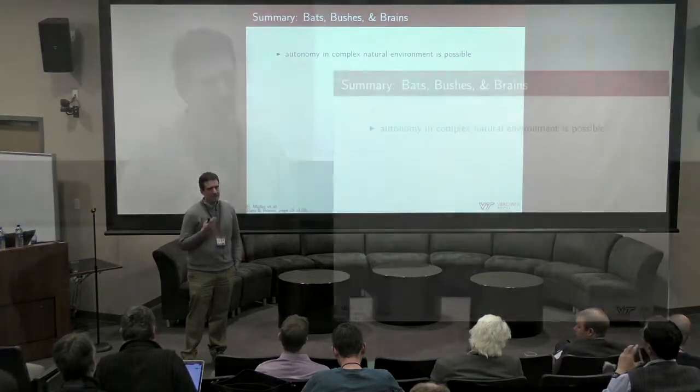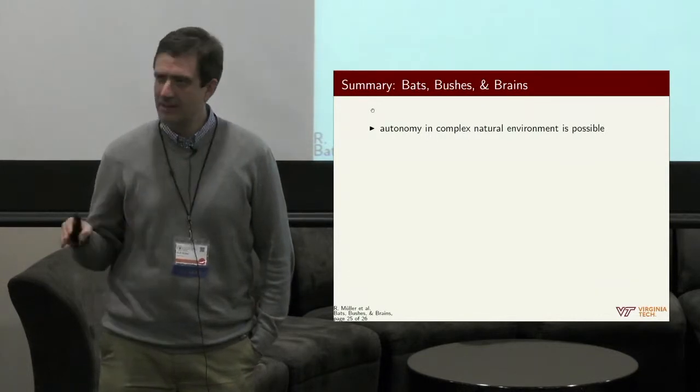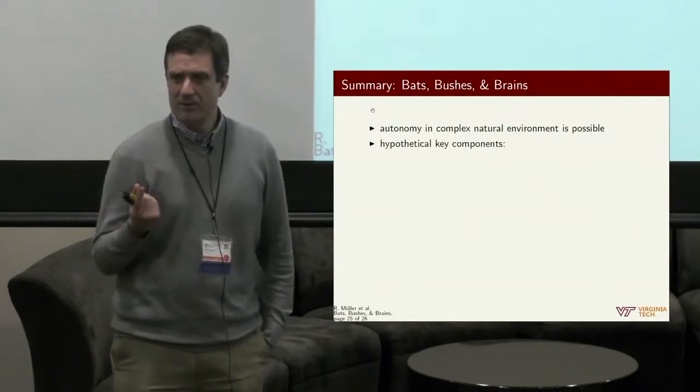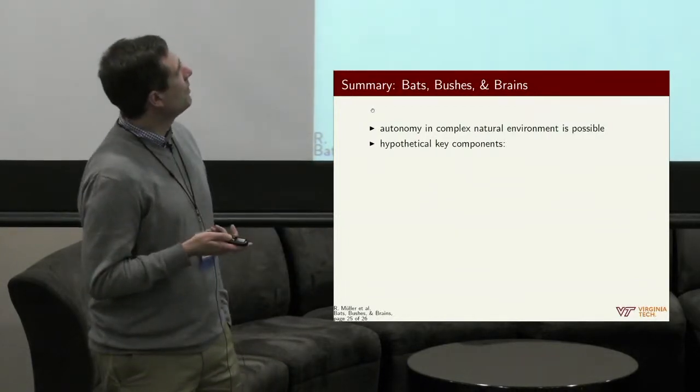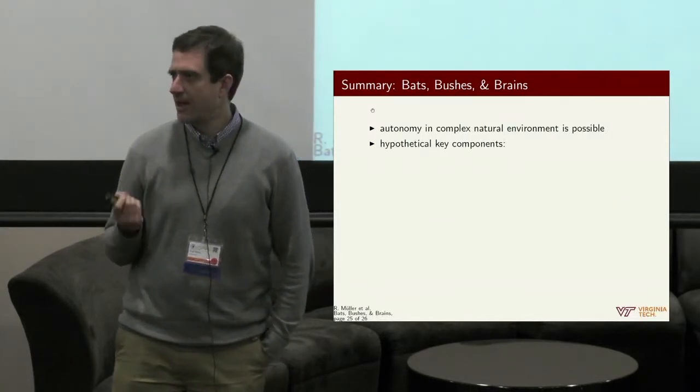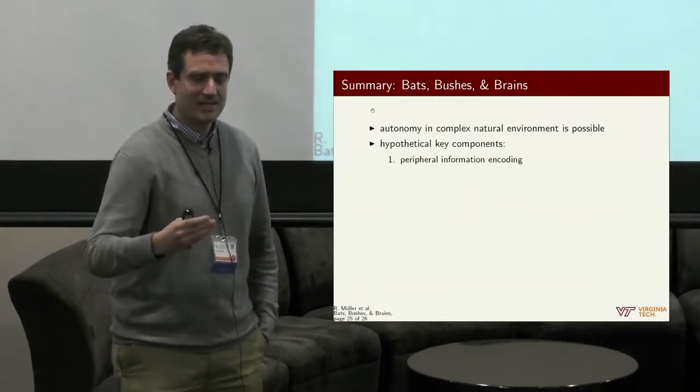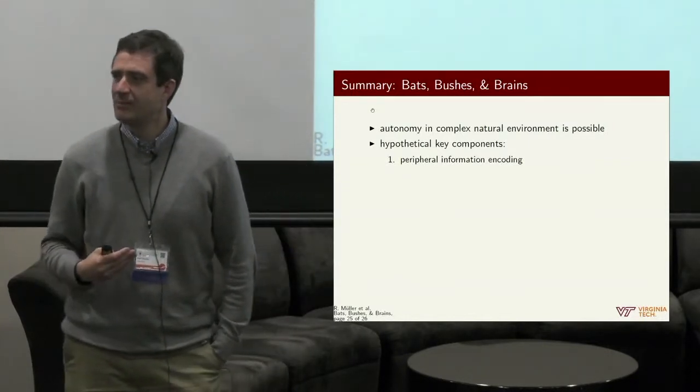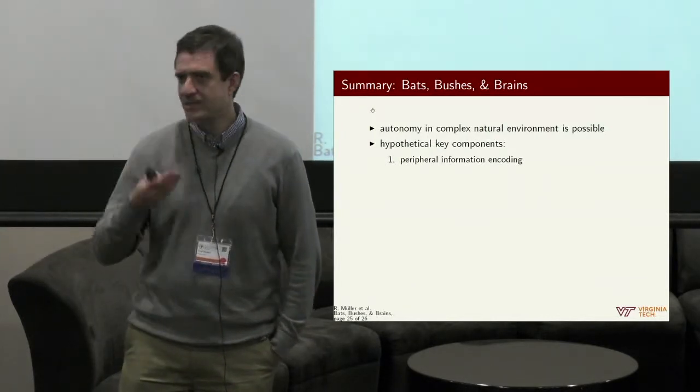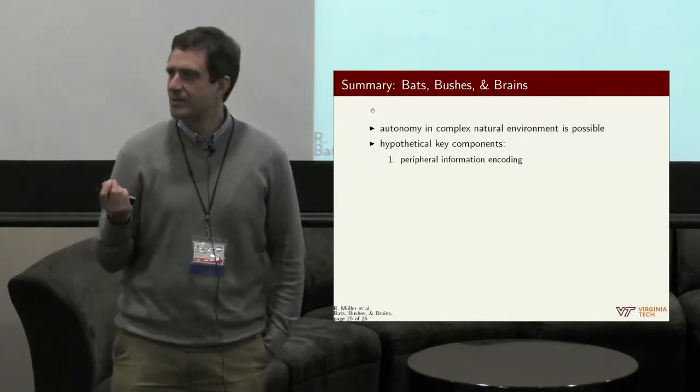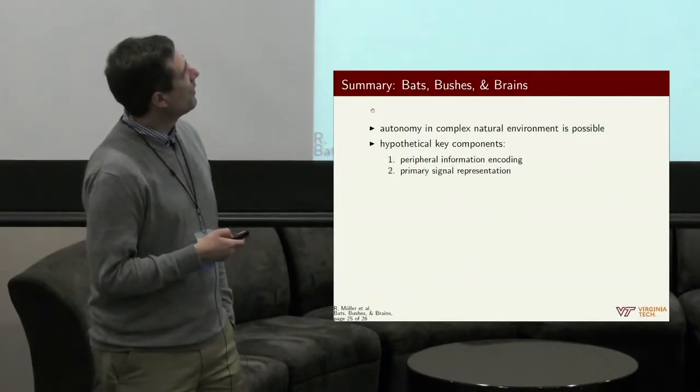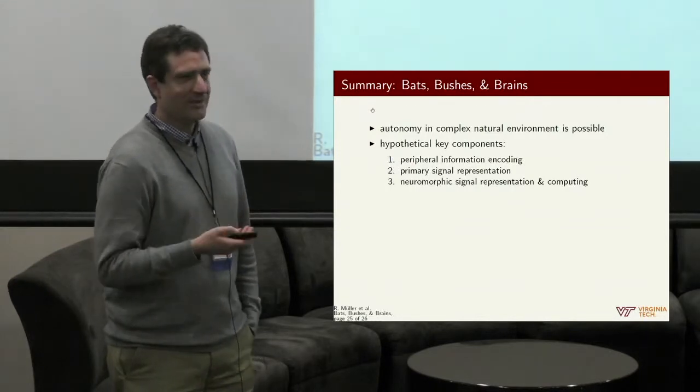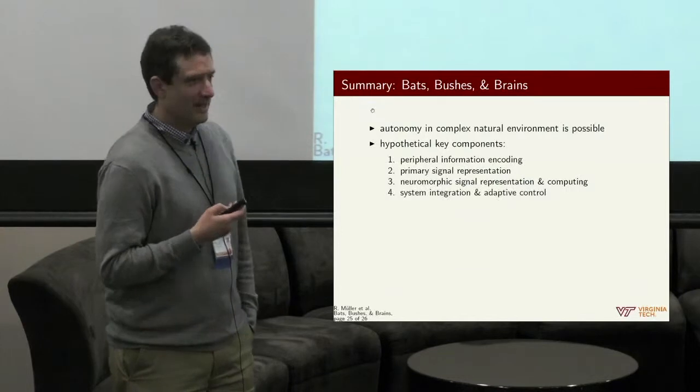What bats show us is that autonomy in complex natural environment is possible. No matter how badly we have failed so far achieving it, the bats do it a billion times every night. I think, this is my hypothesis, but I think there's four key components here. The first is you have to look at what happens in the periphery. I believe this is very important. The softest information processing systems follow a Markov chain. At the beginning, if you don't encode it, you can do later whatever you want, you're not going to get it back. So the periphery is important, and I think that's why bats have evolved eight muzzles on the nose leaf, 20 plus muzzles on each ear. That speaks to this importance. This gateway is really important, so I think that's the first important thing.